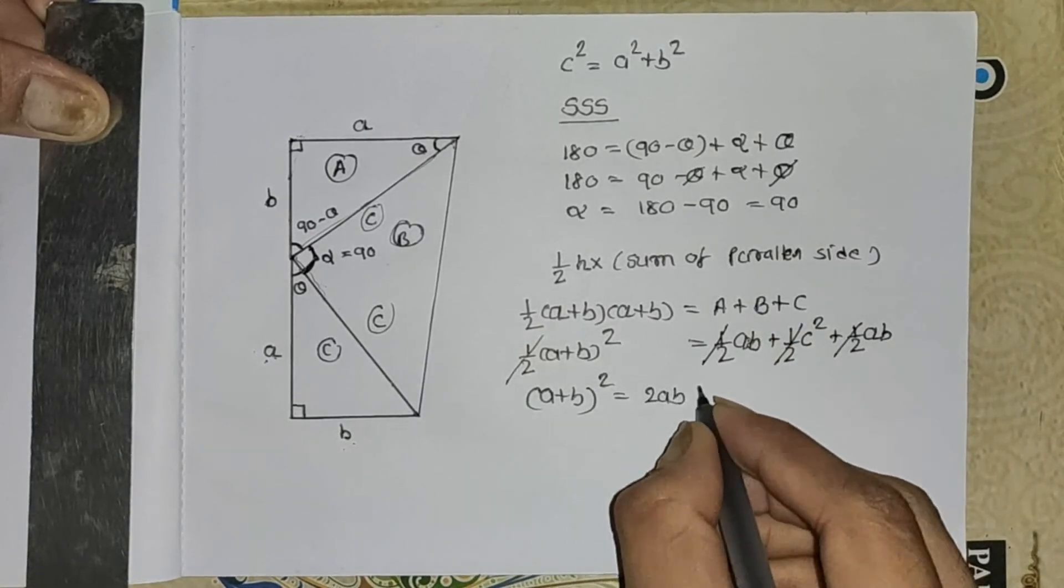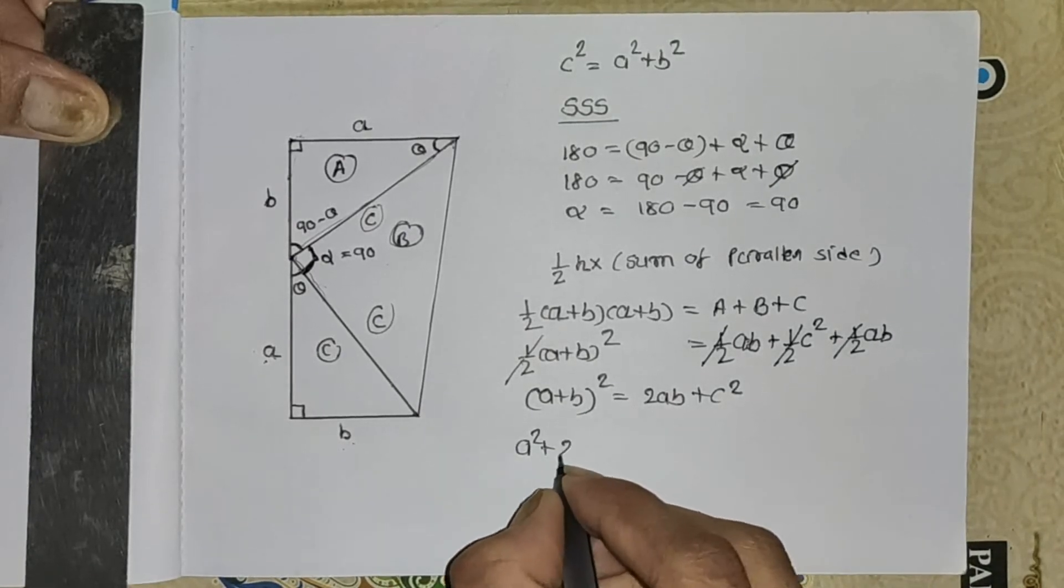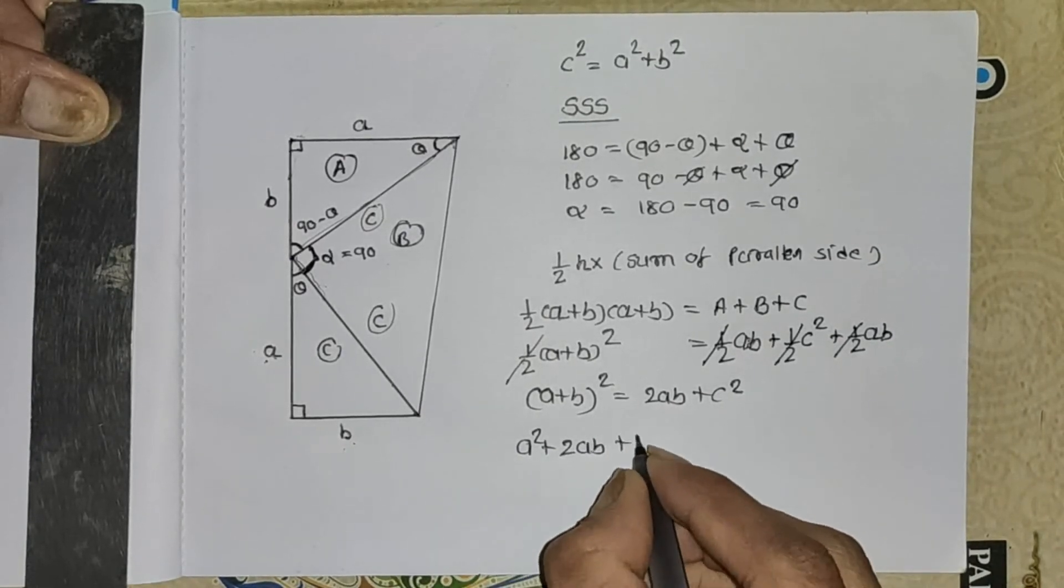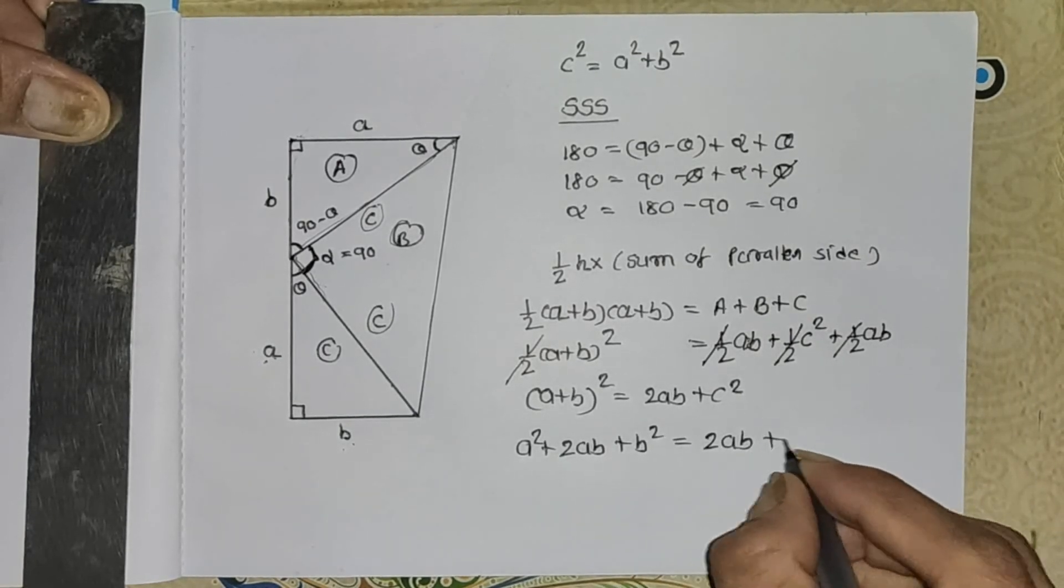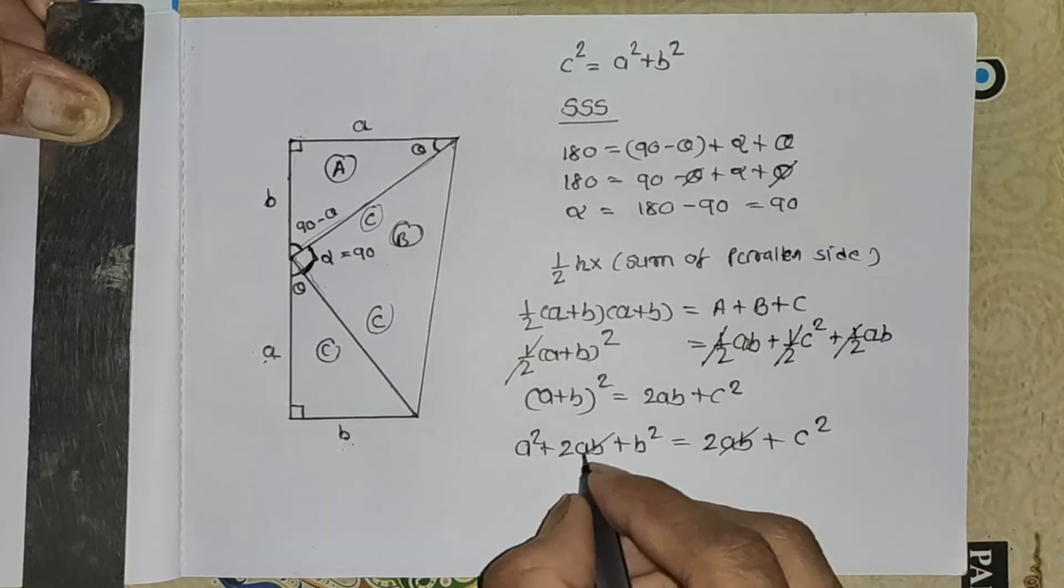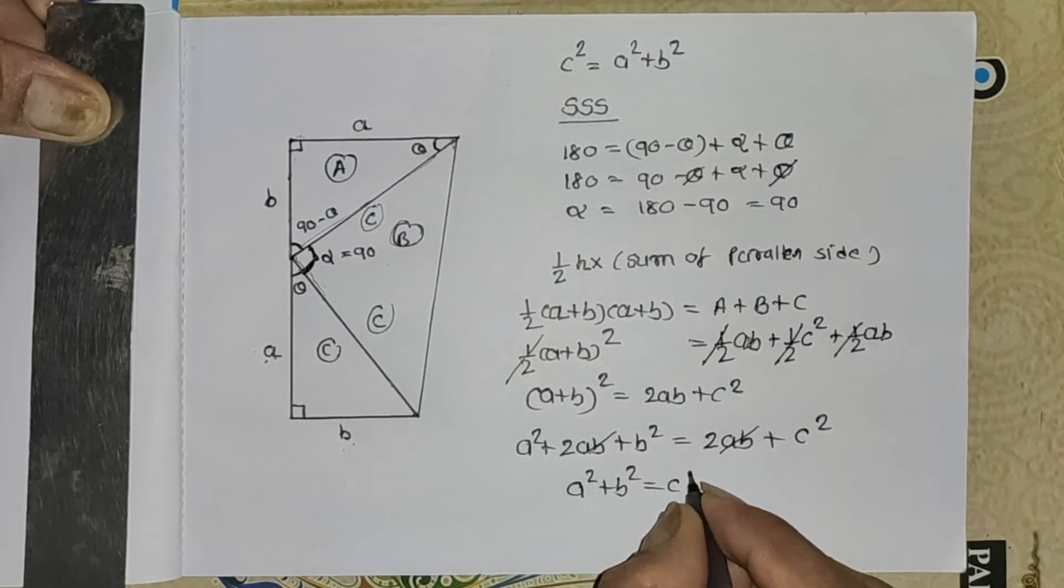One half times (a plus b) squared equals 2ab plus c squared. A square plus 2ab plus b square equals 2ab plus c square. 2ab cancels. A square plus b square equals c square.